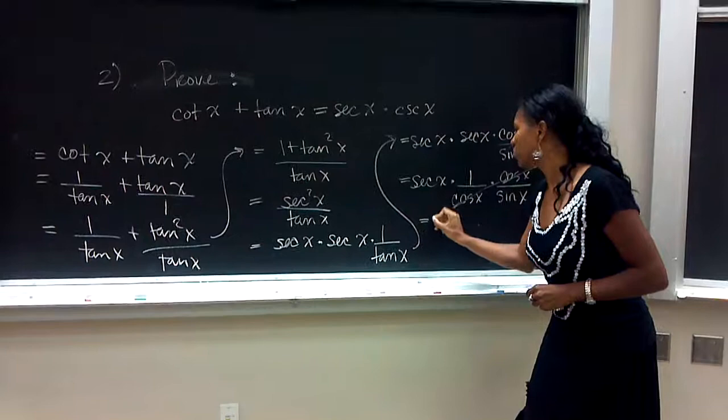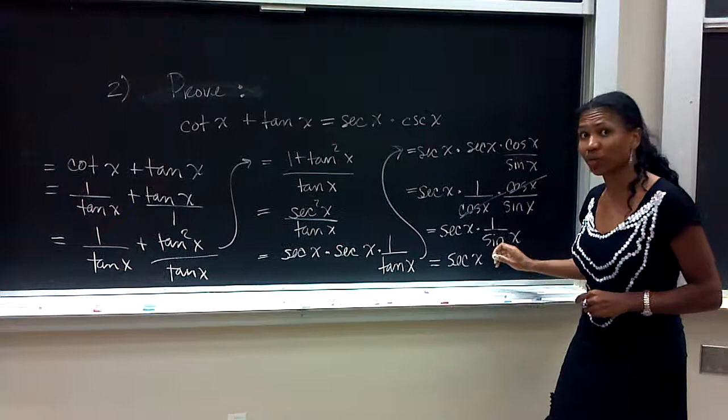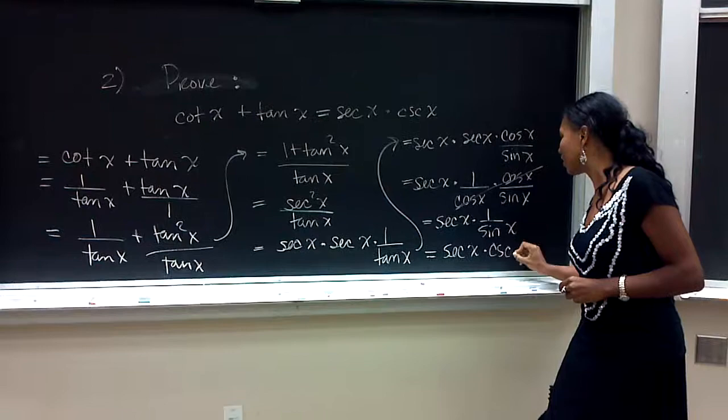This becomes secant x times 1 over sine x, which as our trigonometric identity shows, is cosecant x.